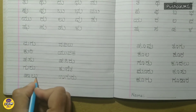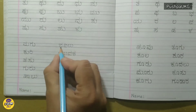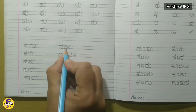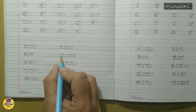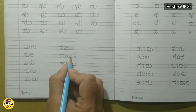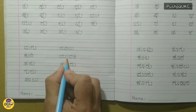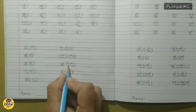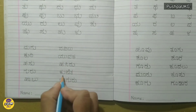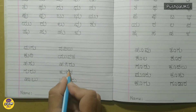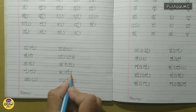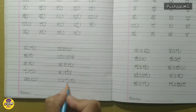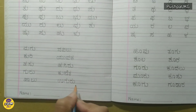Ha, Lu, Ha, Lu. Na, Vi, Lu. Na, Vi, Lu. Yu, Va, Ke. Yu, Va, Ke. Ha, Si, Ru. Ha, Si, Ru. Ku, Ni, Ta. Kunita. U, Guru. U, Guru.